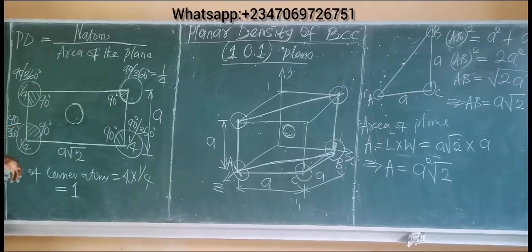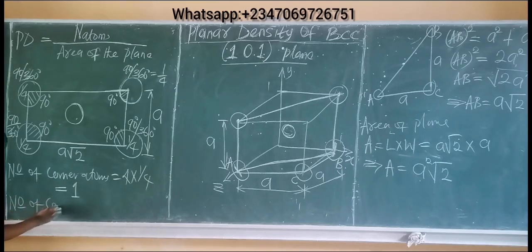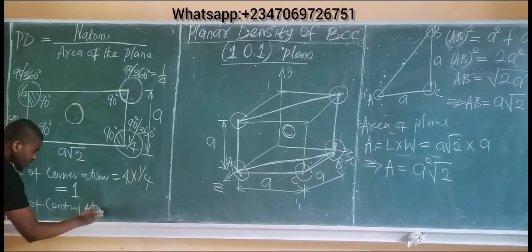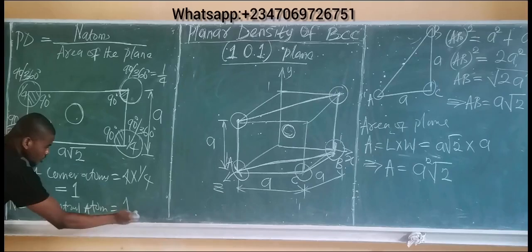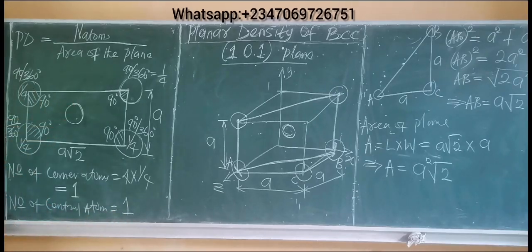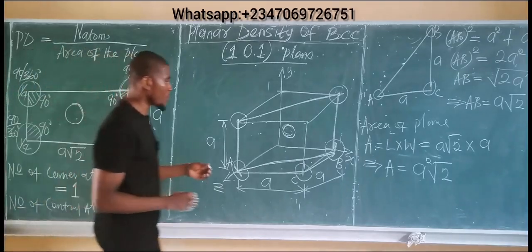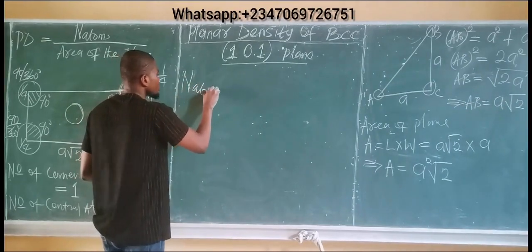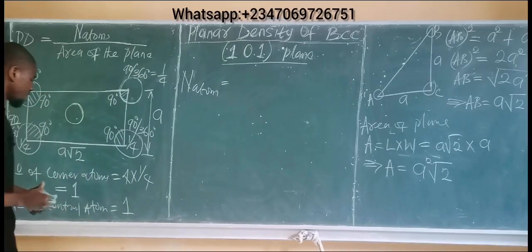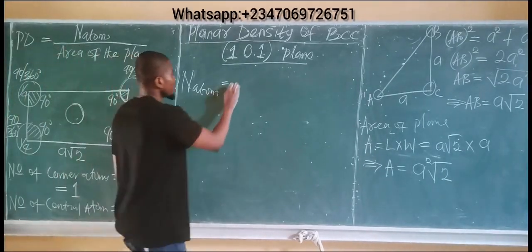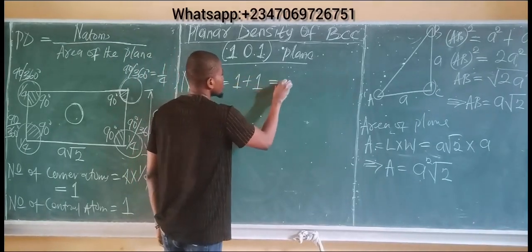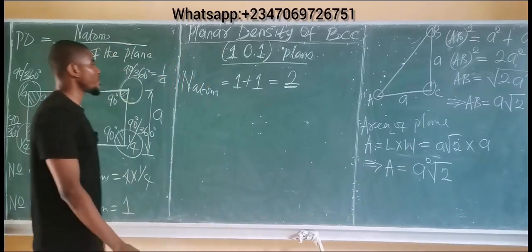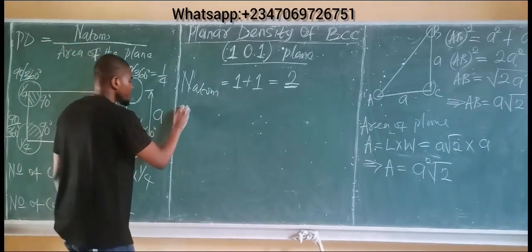The central atom contributes 1 full atom. Therefore, the total number of atoms = corner atoms + central atom = 1 + 1 = 2.